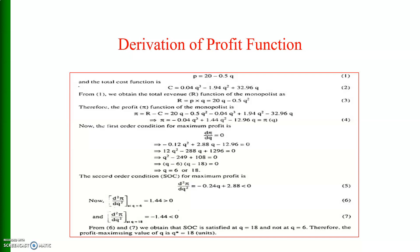The problem with the previous regression equation was that the model was not specified correctly, and when the constant term was suppressed the results were haphazard. Usually we have a profit function with no intercept — meaning if output is 0, profit is 0. The profit function has a linear term, a quadratic term, and a cubic term.